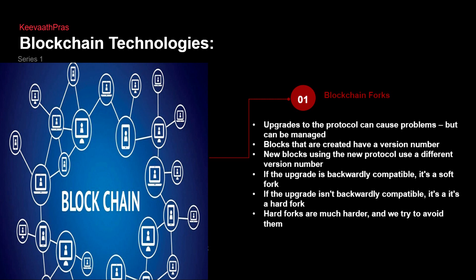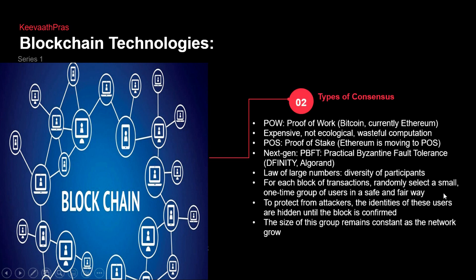If it is backward compatible — that is, version 2 is compatible with version 1 — it's called a soft fork. If it is not compatible, then it is called a hard fork. Hard forks are very hard and we actually try to avoid them.